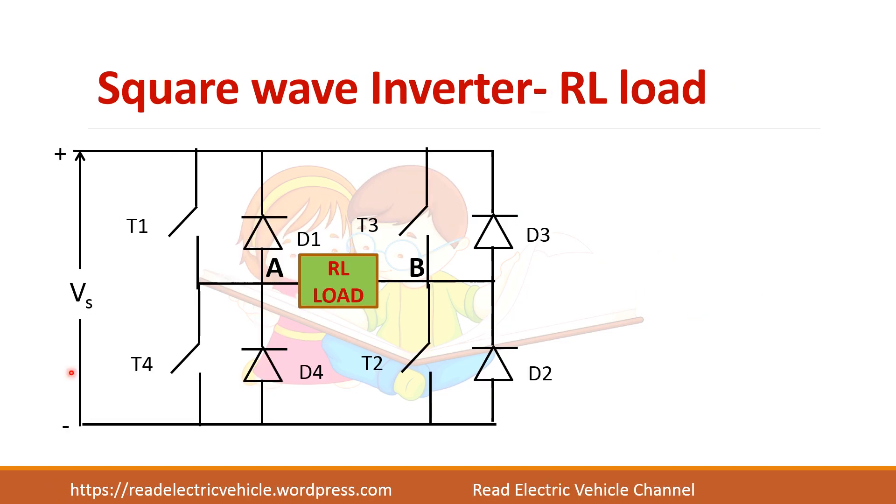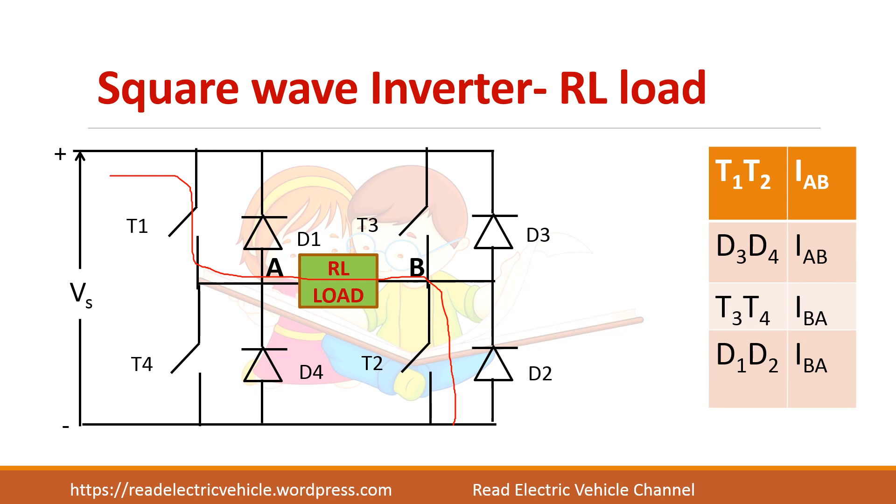This is the circuit diagram when diodes are connected in anti-parallel. Now let us assume that T1 and T2 are conducting the current and the current flows through A to B. Now if T1 and T2 are turned off, the current has to flow in the same direction. It cannot change its direction immediately because of the nature of the load. In that case the diodes will take care of the load current. So diode D3 and D4 now carry the current in the same direction till the current becomes zero. Then only T3 and T4 will get turned on.